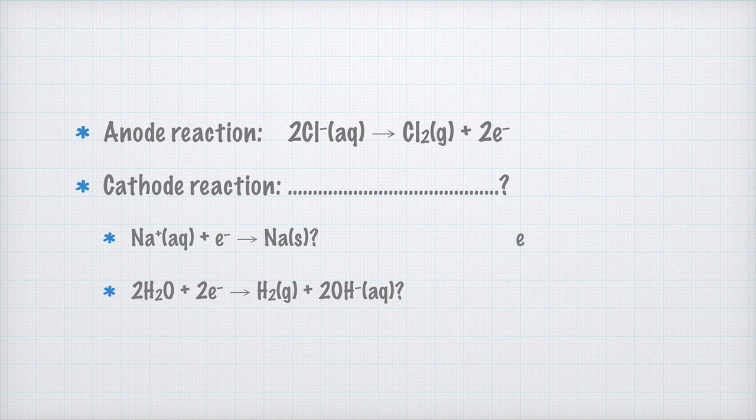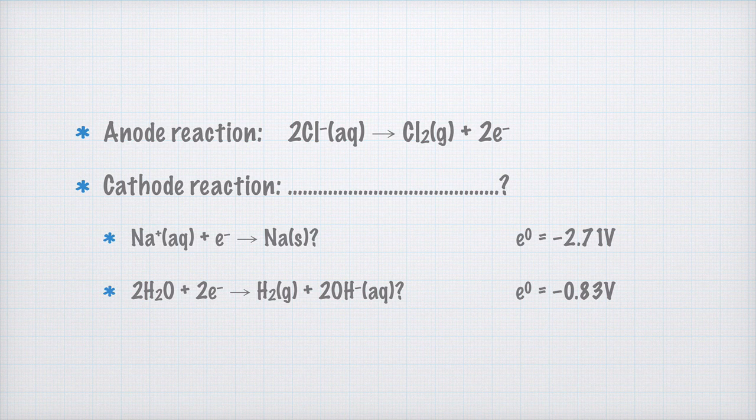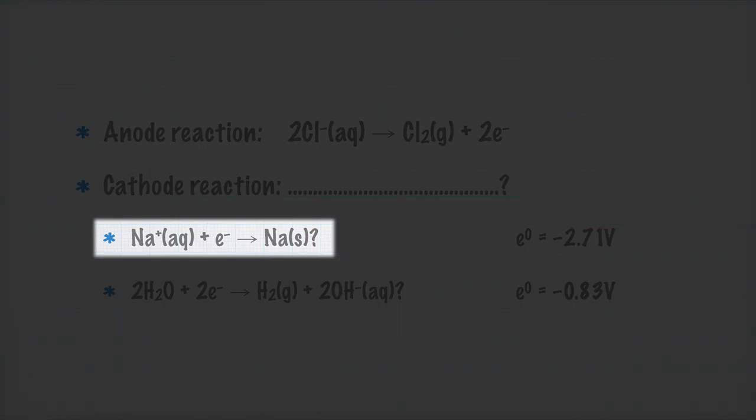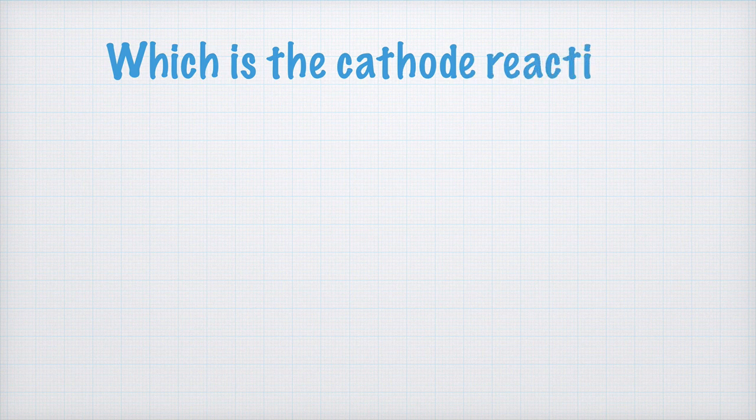Let's also add the standard electrode potential for sodium. It is minus 2.71 volts, and the standard electrode potential for water, which is minus 0.83 volts. We'll need them in a short while. Now consider the first reaction here. Could it be that the sodium ions are reduced to solid sodium? Let's turn to yet another page, and we write like this. Next. Which is the cathode reaction?